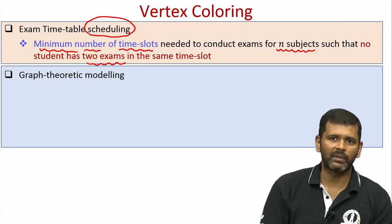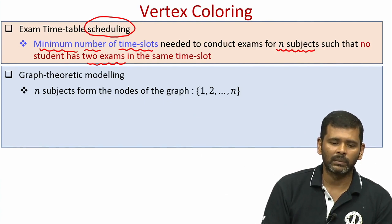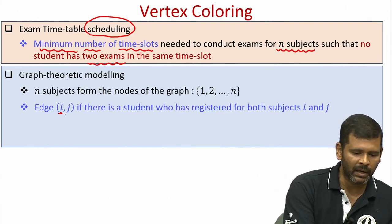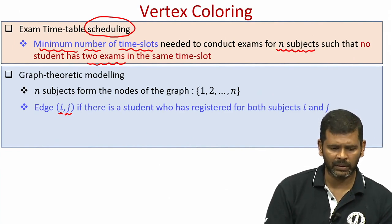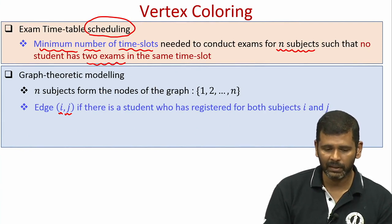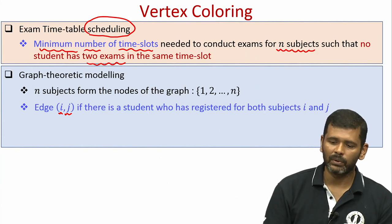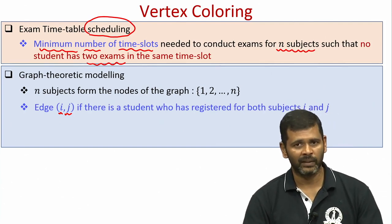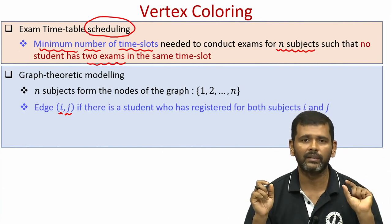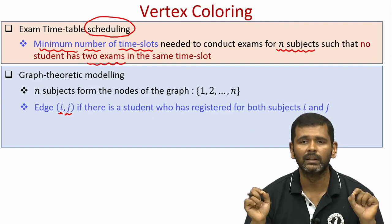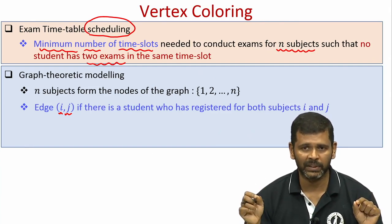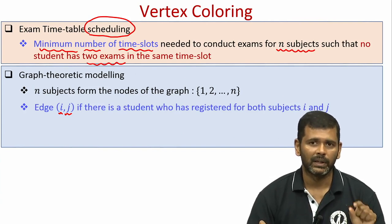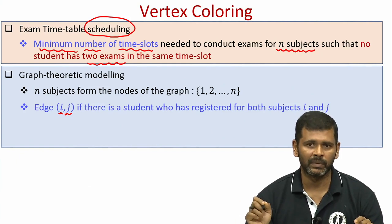How do we model this as a graph theoretic problem? The n subjects form the n nodes of the graph. We add an edge between node i and node j if there is at least one student who has registered for both subject i and subject j. If no student has taken both subjects, we can treat them as independent and conduct both exams in the same time slot. But if there is an edge between subject i and subject j, we cannot schedule their exams in the same time slot.